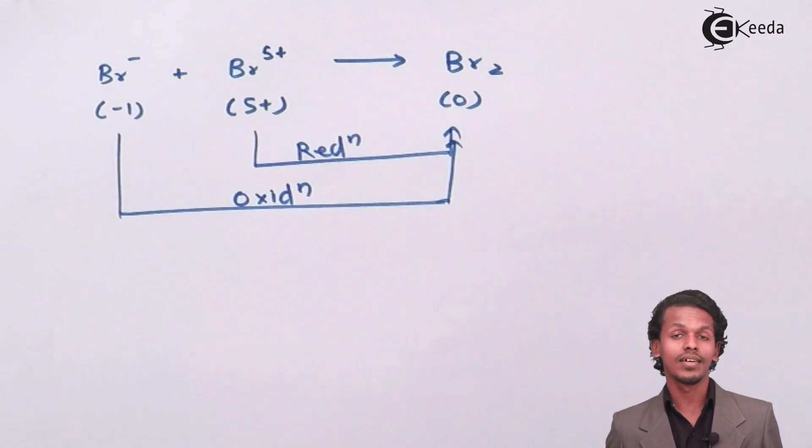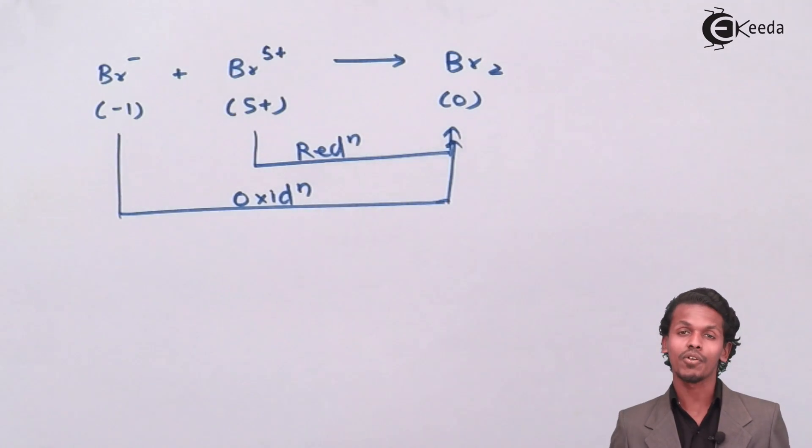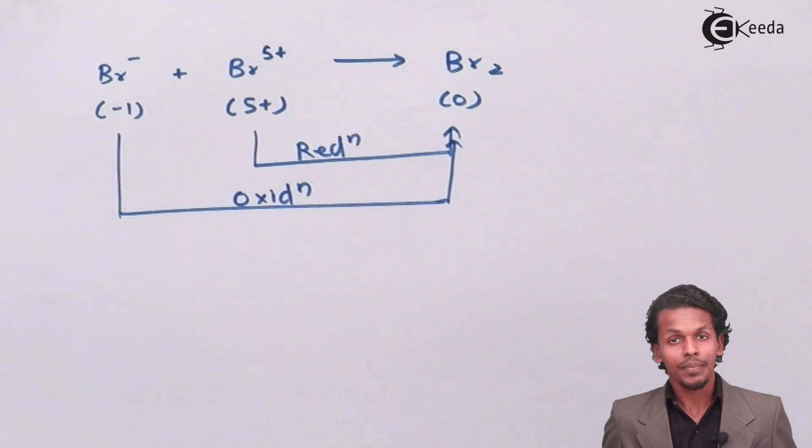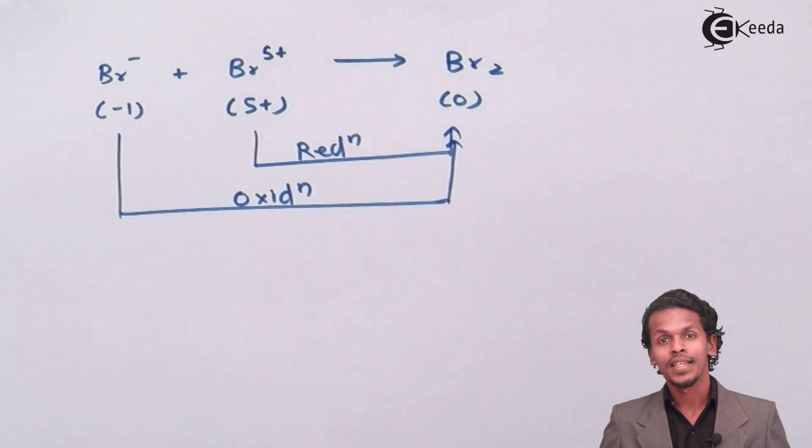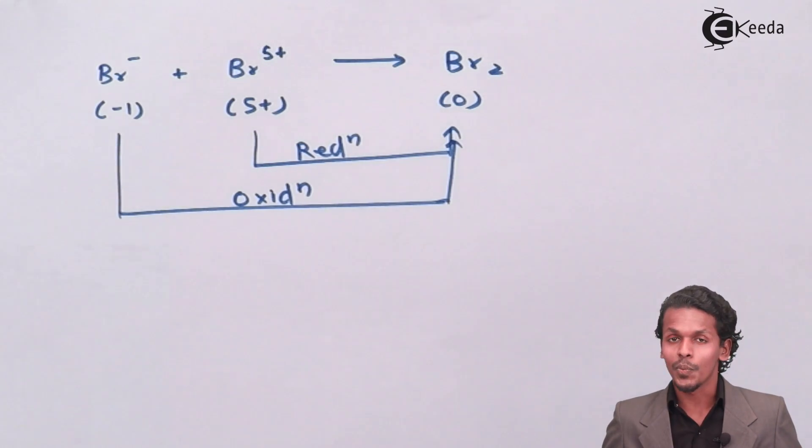The overall reaction is a redox reaction, and we can observe that two atoms of the same element show different oxidation states in reactant form and combine with each other to give a different oxidation number in product form. This was an example of a comproportionation reaction, and as the name suggests, it means the combination of the reactants and is the reverse of the disproportionation reaction.